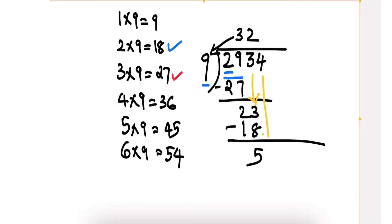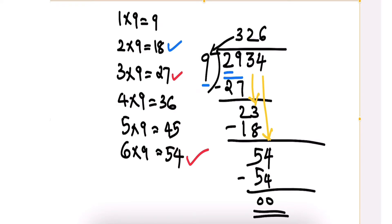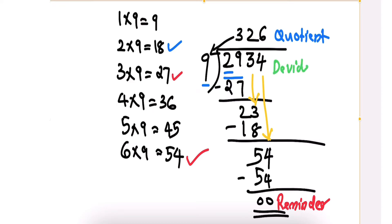Bring down the 4. Our number of consideration is now 54. Use the multiplication table again: 6×9=54. Write 6 in the quotient. Multiply 6 by 9 to get 54. Subtract — we get 0. The process is complete. The remainder is 0, and the answer is the quotient. The number being divided, 2934, is the dividend, and 9 is the divisor.